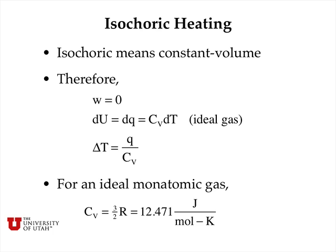In isochoric or constant volume heating, W equals zero because delta V equals zero. We can write the differential form of the first law as dU equals dQ, which equals the heat capacity at constant volume times dT. Integrating, delta T equals Q divided by CV. For an ideal monatomic gas like helium or argon, CV equals three-halves R, or 12.471 joules per mole per kelvin.